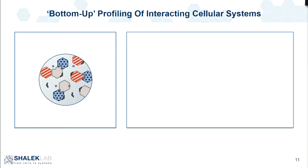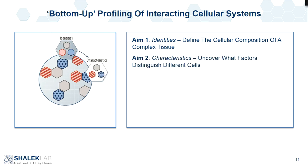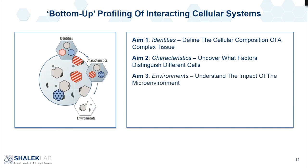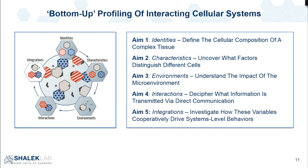Hidden within this is the way my lab likes to approach systems. The first thing we always want to understand is what are the cells that comprise our system — this is the periodic table that Aviv just brought up. The question is what are the characteristics that differentiate their phenotype? A natural thing to ask is what happens in the environment that a cell exists in, how does the impact of interactions with other cells influence its phenotype, and most importantly, since we are complex multicellular organisms, how does all of this integrate together to drive the system as a whole?